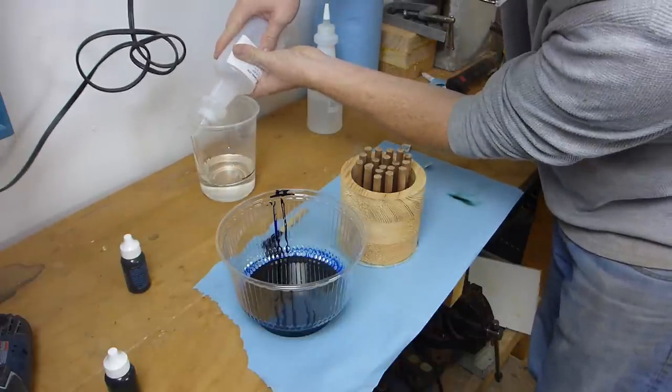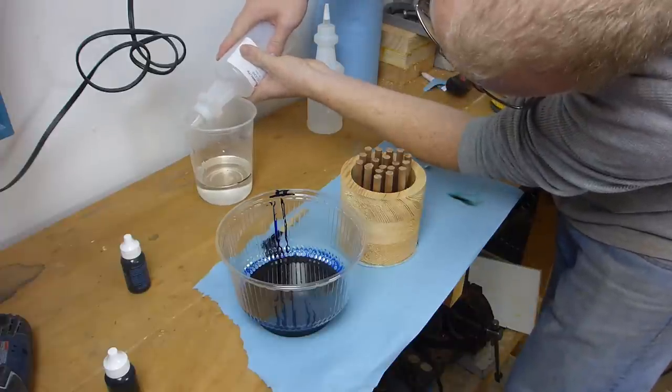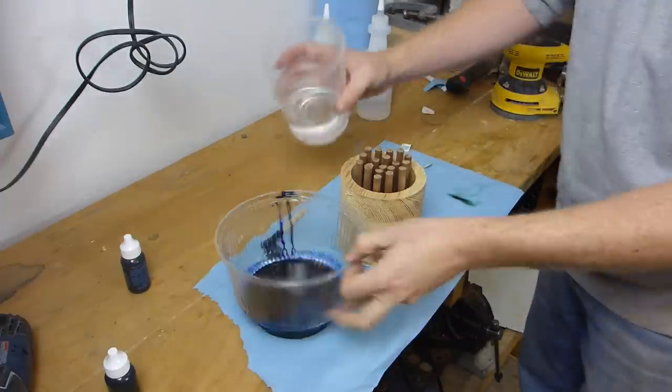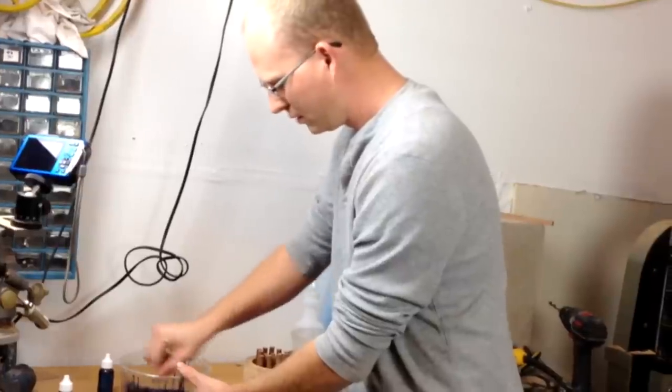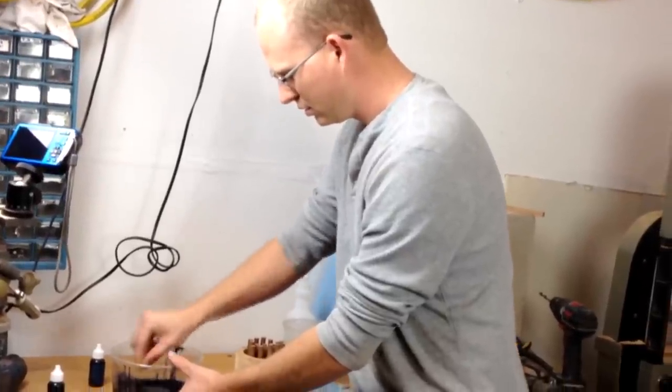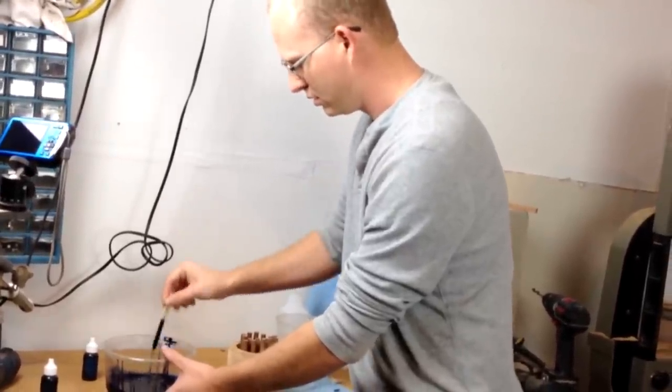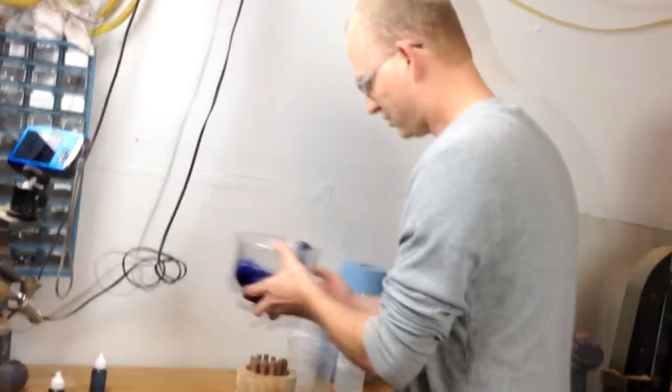So just when I had decided to forge ahead and started mixing in part B of the resin, the battery in my camera died. Now, Alumilite Clear has a pot life of 7 minutes and I made the executive decision to use one of those minutes to run inside and quickly ask my wife to film me with her phone while I poured in the resin.